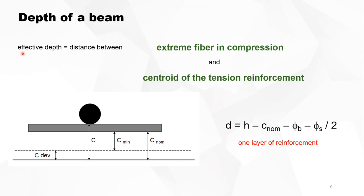Just to remind you — this is the outside of a concrete beam. If this is the main tension reinforcement and this is the stirrup bar, then for the main reinforcement the concrete cover is C. The minimum cover is to the reinforcement closest to the surface, which in this case is the stirrup — that is C minimum — the minimum required distance for concrete cover.